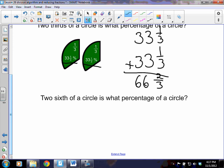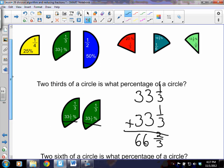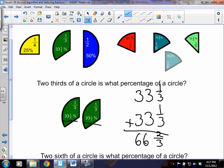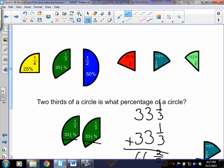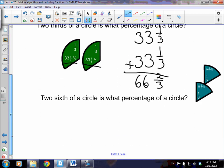At the same time, we can look at another idea. What is 2/6 of a circle as a percentage of a circle? So we can bring down our 1/6, and then 2/6, and once again we can add up our two numbers.